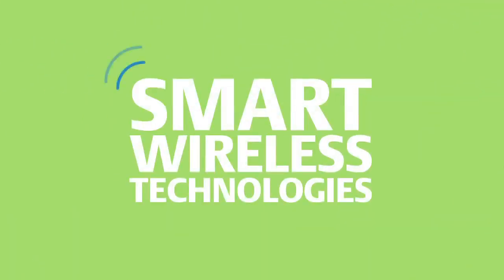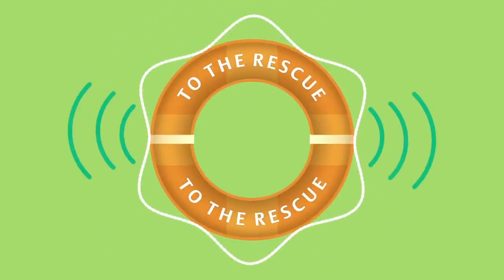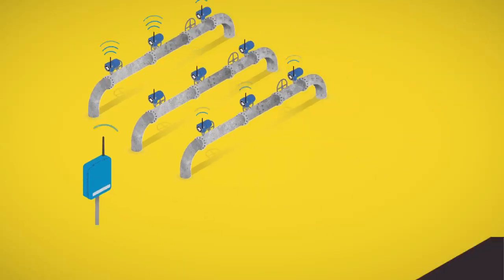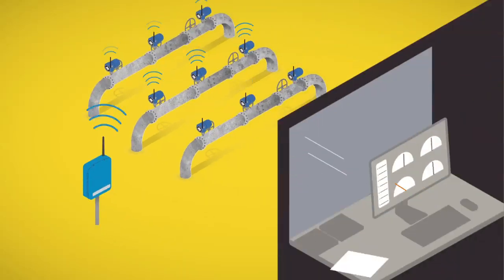Emerson's smart wireless technologies have come to the rescue, enabling refineries to cost-effectively monitor the performance of steam traps around the clock. Now plant employees can spend their time fixing broken traps rather than searching for them.